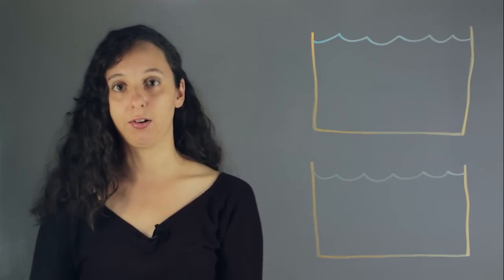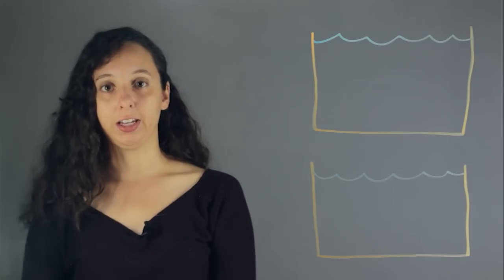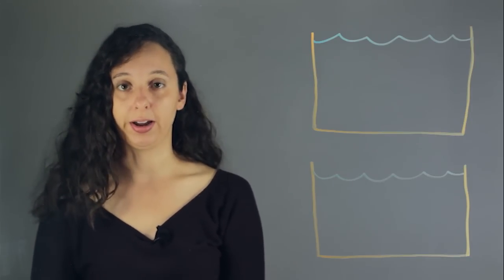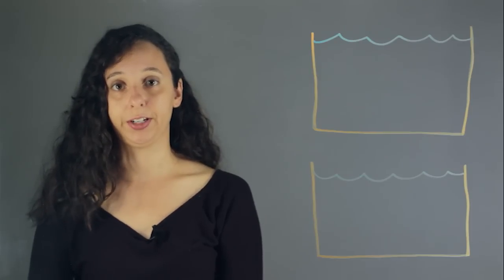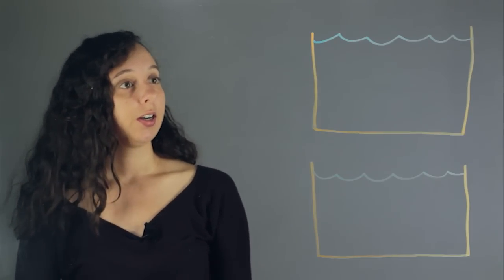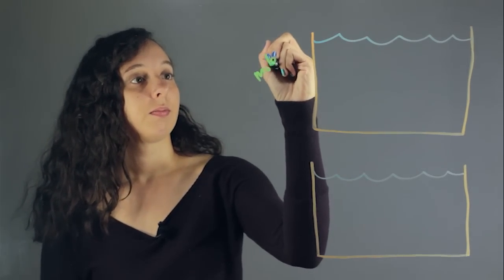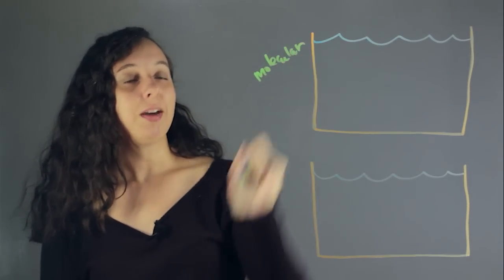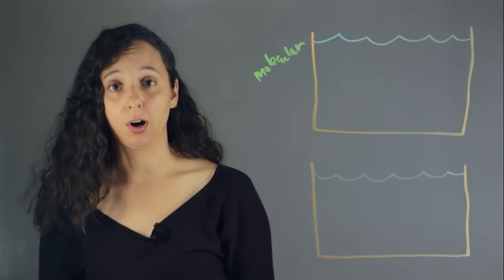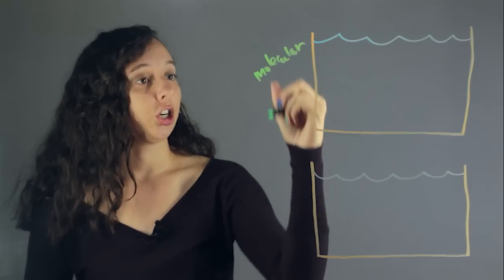All right, so let's take a look at an example of a molecular compound versus an ionic compound and see what has better conductivity. So up here, let's have our molecular compound. And what that means is that it all has covalent bonds. So a good example is sugar.